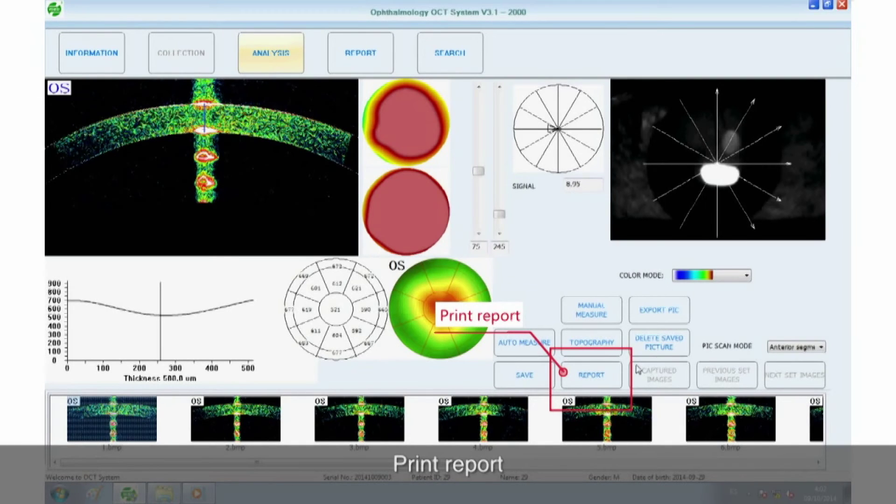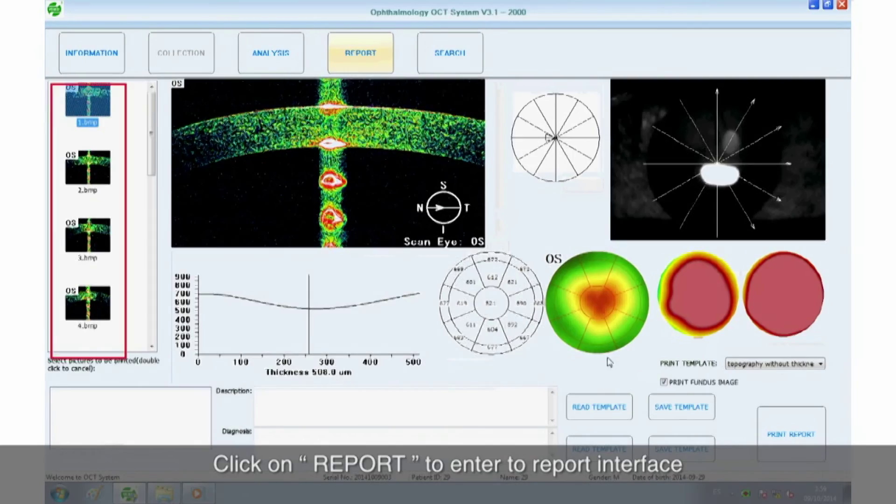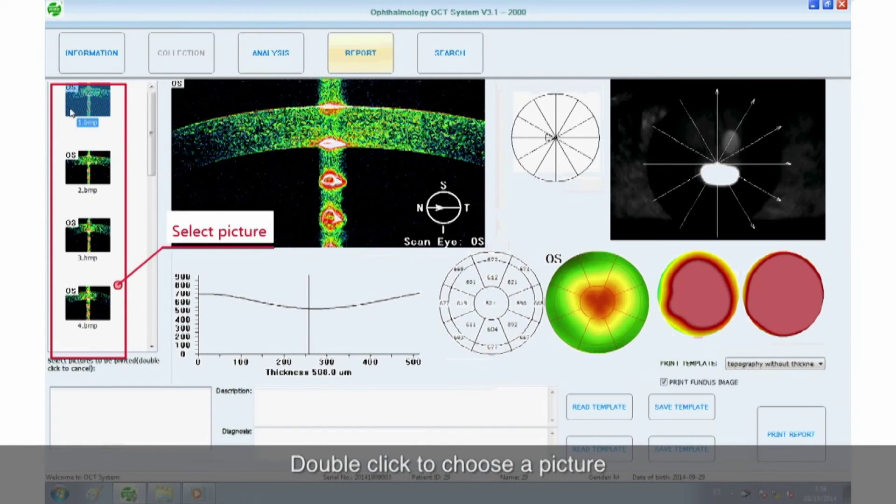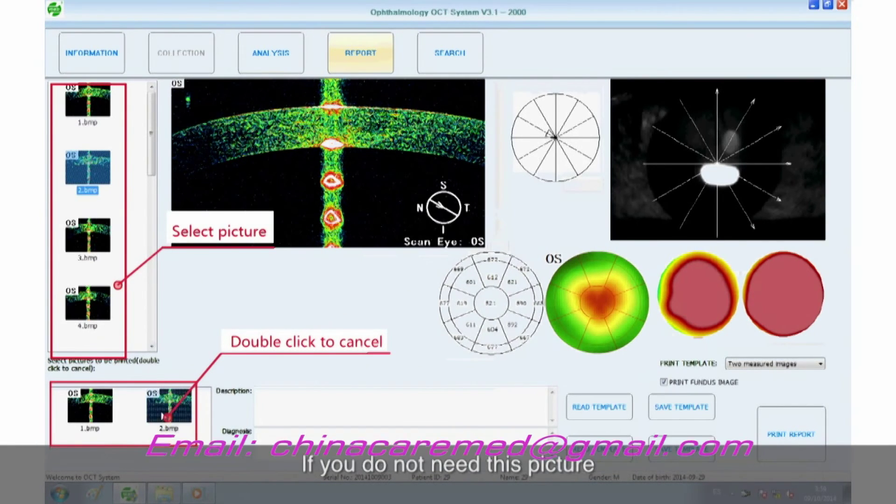Print report. Click on report to enter the report interface. Double click to choose a picture. The chosen picture will appear in the left lower box. If you do not need this picture, double click on the picture in the left lower box to cancel.